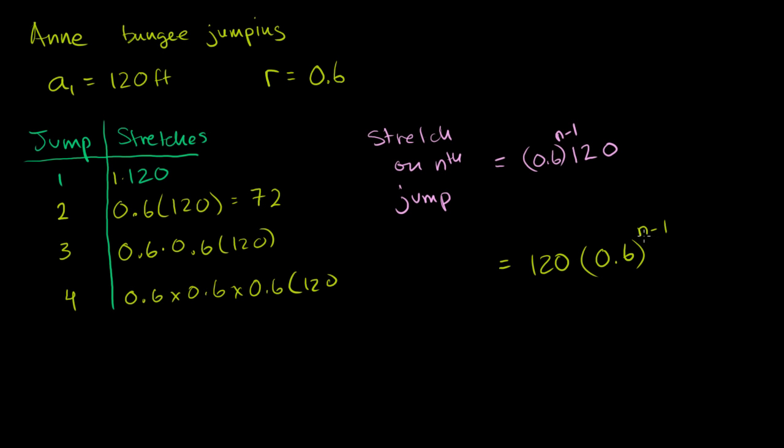Then on the second jump, you put a 2 minus 1. And notice, 2 minus 1 is the first power, and we have exactly 1 0.6 here. So I figured it was n minus 1, because when n is 2, we have 1 0.6. When n is 3, we have 2 0.6's multiplied by themselves. When n is 4, we have 0.6 to the third power. So whatever n is, we're taking 0.6 to the n minus 1 power, and of course, we're multiplying that times 120.